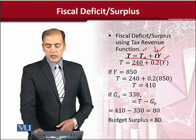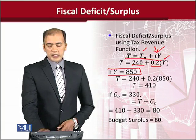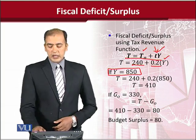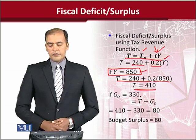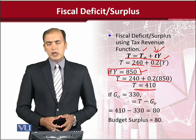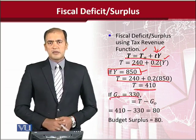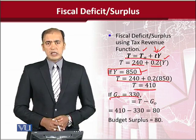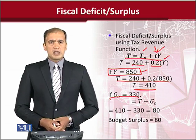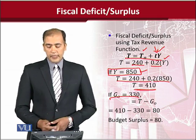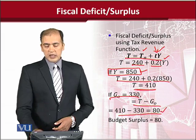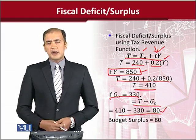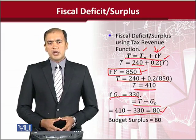This is the numerical specification — this is t0 and this is small t. If the value of Y is 850, when we put it in the tax equation we get the amount of tax at this level of income. This is the tax revenue that we are able to accumulate. We can compare it with the spendings, which is 330 in this case — an exogenous variable already given. Revenue minus expenditure is 80, which shows that there is a fiscal surplus. It is a desirable situation for the economy.